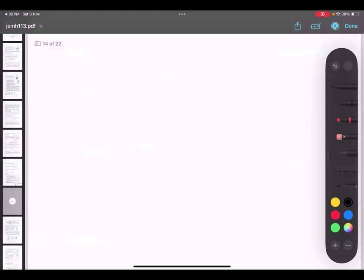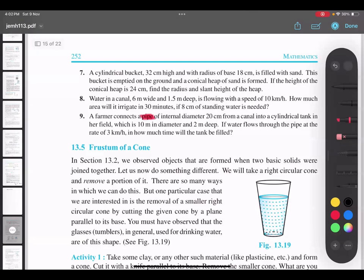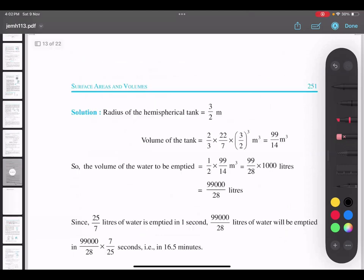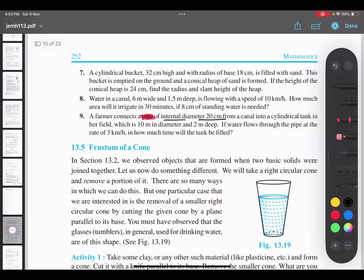Cylindrical, very good. This is the pipe. Diameter 20. They are talking about internal diameter. They have not talked about external diameter, so we will consider that as the only diameter - 20 cm is okay. If they give inner and outer, then it becomes a different kind of question.